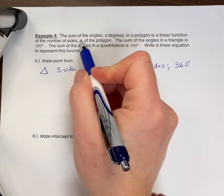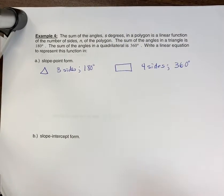So we're going to use s and n as our variables. We can still think x and y at first just to help us, but the sum of the angles in a triangle is 180 degrees. The sum of the angles in a quadrilateral, so four-sided shape, is 360 degrees.